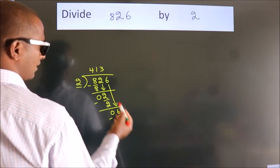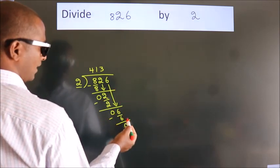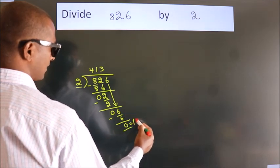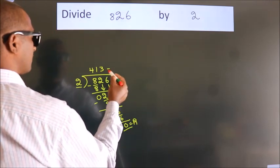After this, no more numbers to bring it down. So, we stop here. This is our remainder. This is our quotient.